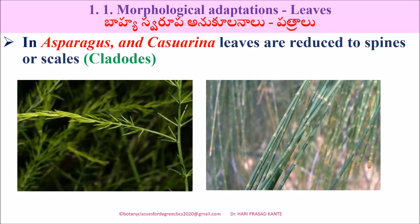Asparagus and Casuarina leaves are reduced to spines or scales. Asparagus is reduced to spines and scales. Casuarina is also reduced to spines and scales.